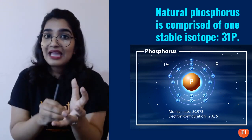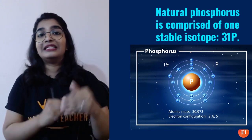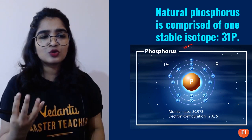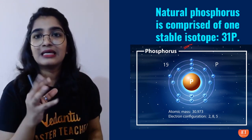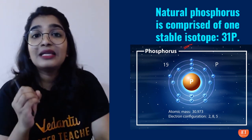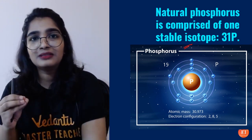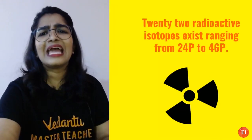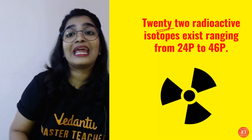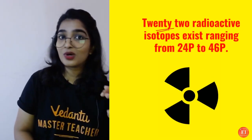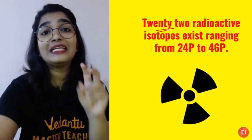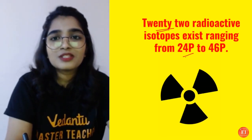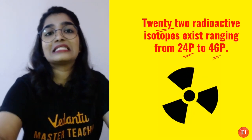There are isotopes — as you know, isotopes are atoms of the same element with the same atomic number but different mass numbers. For phosphorus, the stable isotope has mass number 31. Most isotopes are not stable, but phosphorus-31 is the one stable isotope. Additionally, there are 22 radioactive isotopes of phosphorus, ranging from phosphorus-24 to phosphorus-46.